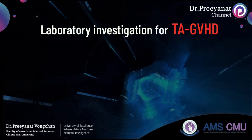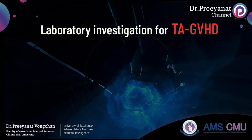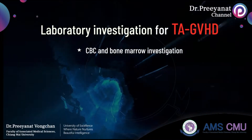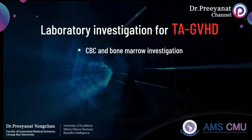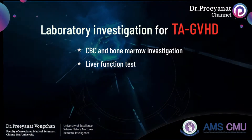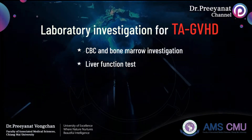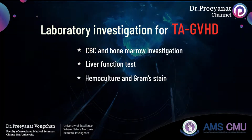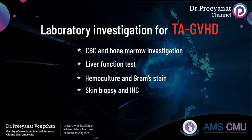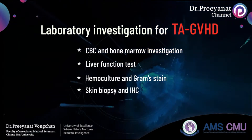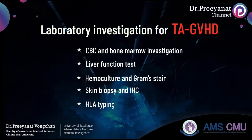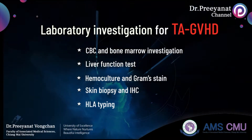Laboratory investigations are performed according to tissues and organs affected, such as CBC and bone marrow investigations, which demonstrate pancytopenia and hypocellular patterns respectively. Abnormal liver function tests present as an increase in liver enzymes and bilirubin. Hemoculture and Gram stain, if there are signs and symptoms related to bacterial infection. Immunohistochemistry of skin biopsy demonstrates the accumulation of donor lymphocytes, and HLA typing confirms the diagnosis of TA-GVHD.